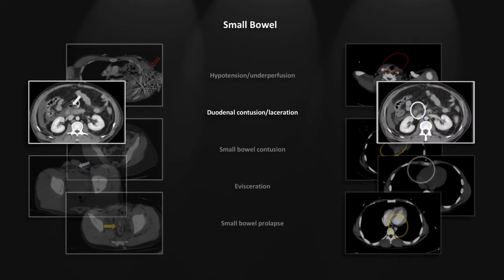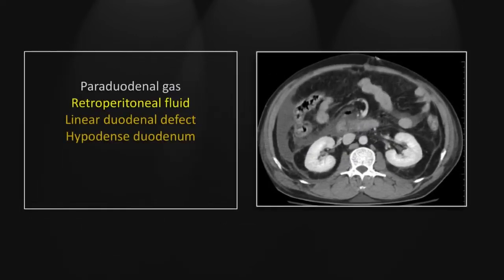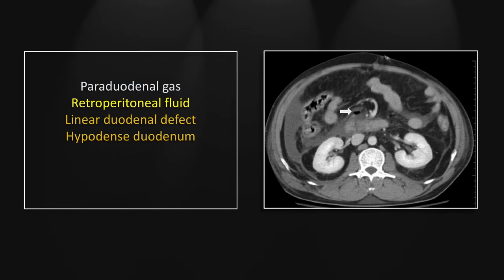Our next case is a duodenal contusion and laceration. There is a small focus of periduodenal gas and rather extensive retroperitoneal fluid in the anterior perirenal space, consistent with an injury to the duodenum. We are lucky enough to see a linear lucency through the wall of the duodenum — actually visualizing the laceration is a relatively uncommon thing. We can also visualize the contusion to the duodenal wall, with an abrupt transition where to the patient's right the small bowel wall is hypodense and to the patient's left it is not.